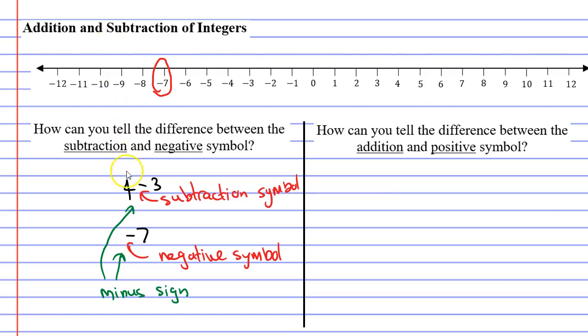So for example, with 4 minus 3, we could also say 4 subtract 3. And with the negative 7, we can also refer to it as minus 7.